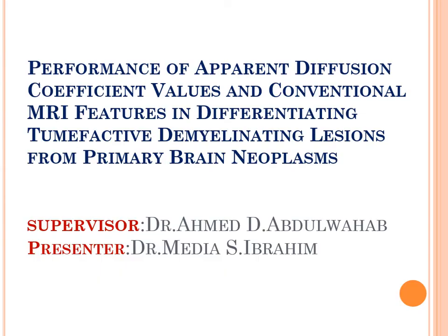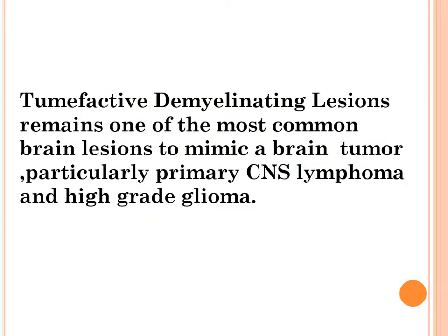Good morning, everyone. The topic is: performance of apparent diffusion coefficient value and conventional MRI features in differentiating tumefactive demyelinating lesions from primary brain neoplasm. Tumefactive demyelinating lesions remain one of the most common brain lesions to mimic a brain tumor, particularly primary CNS lymphoma and high-grade glioma.